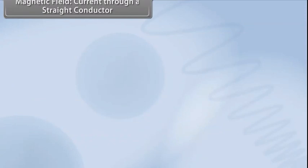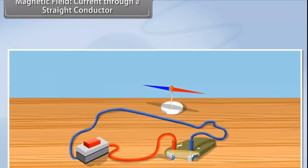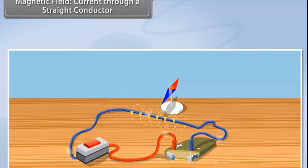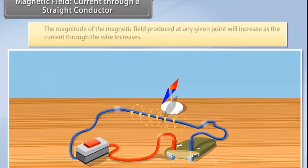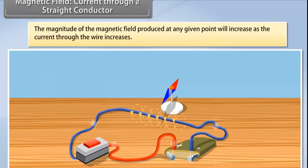Magnetic field current through a straight conductor. As you have seen earlier, let us see what happens when we change the current that is passing through the wire. The effect on the compass also varies. If you increase the current, the deflection of the needle of compass will increase. From this we know that the magnitude of the magnetic field produced at any given point will increase as the current through the wire increases.